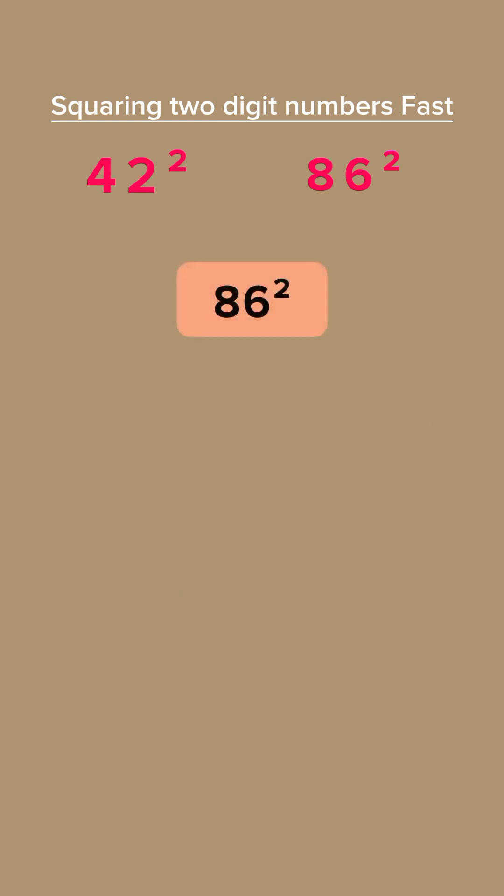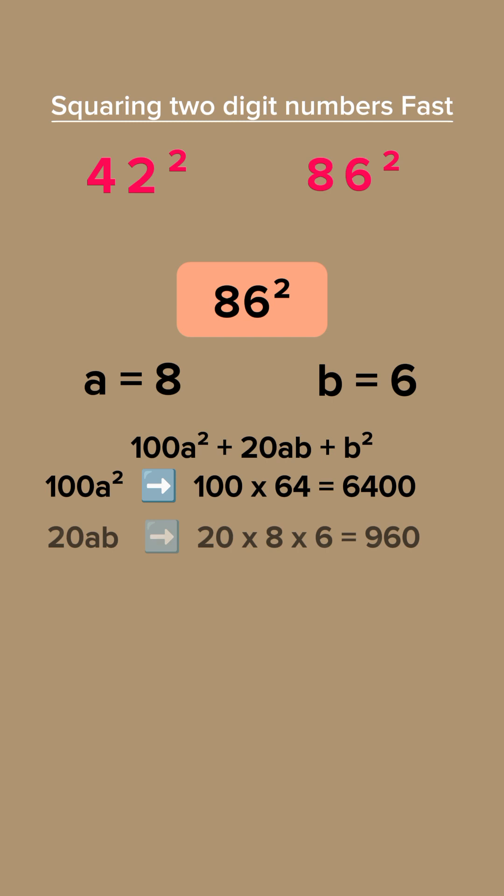Example 2. Square of 86. A equals 8, B equals 6. 8 squared equals 64. 100 times 64 equals 6,400. 20AB, 20 times 8 times 6 equals 960.